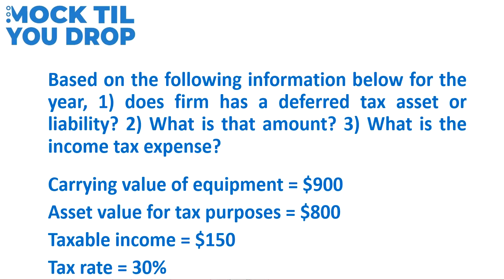We're going to work with one example throughout the video. We have a three-part question with the following information: the carrying value of equipment is $900, and the asset value for tax purposes — in other words, the tax base — is $800. The carrying value is determined by accounting principles, whereas the tax base is determined by tax laws. Because of these different guidelines, we can have slight differences between the carrying value and the tax base.